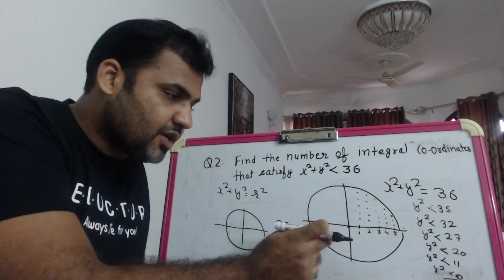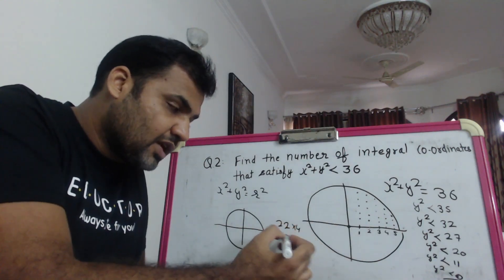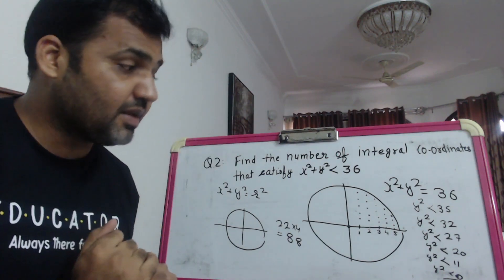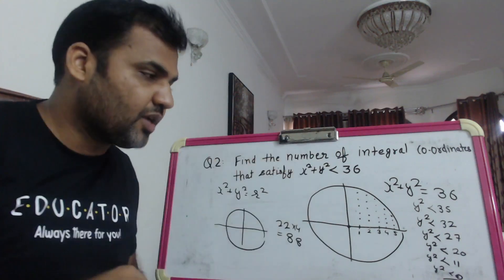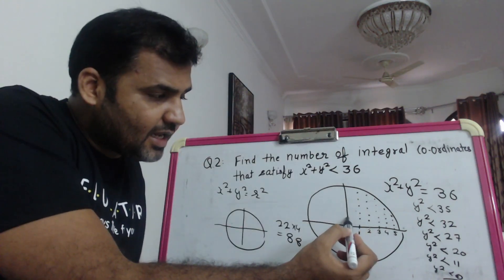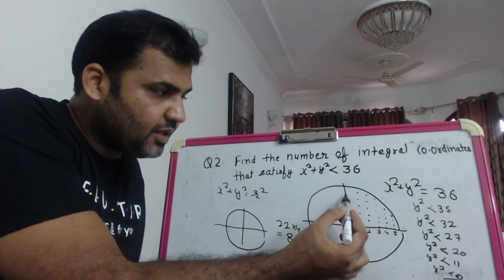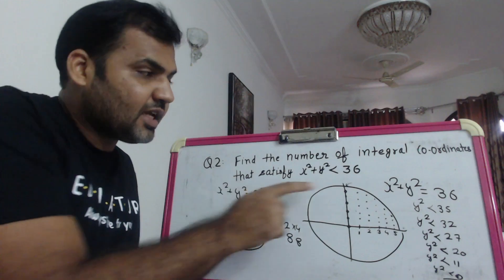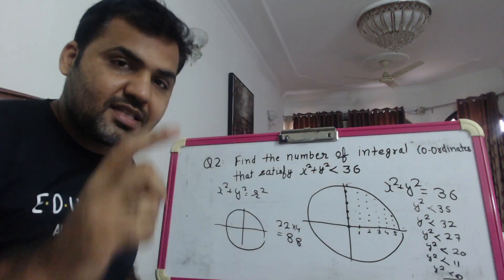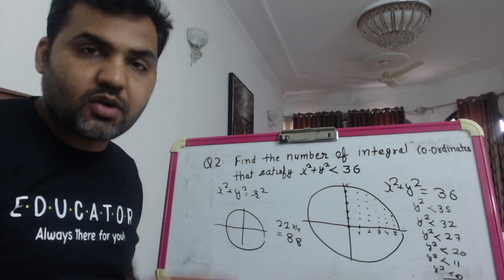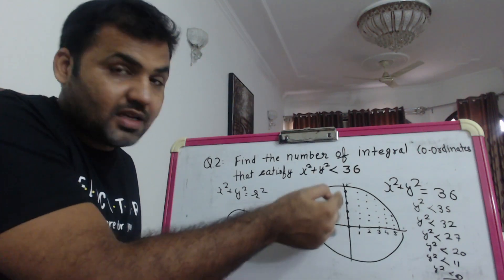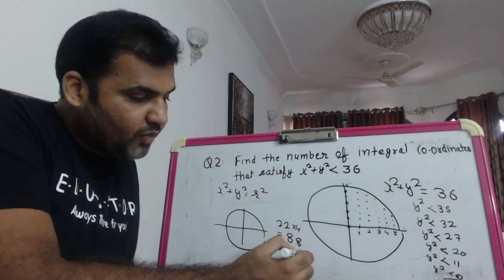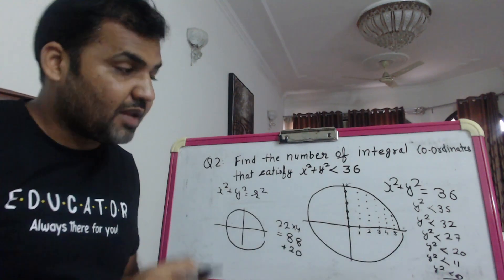Similarly there will be 22 points in the second quadrant, 22 in the third, and 22 in the fourth - so 22 × 4 = 88 total points inside the quadrants. But we've missed the points on the axes. On each positive axis, x or y can go from 1 to 5 (not 6, since that's on the circumference and equality is not included). So 5 points per axis × 4 axes = 20 axis points. Plus the origin (0, 0) gives 1 more point.